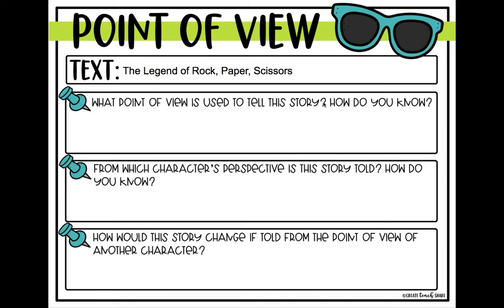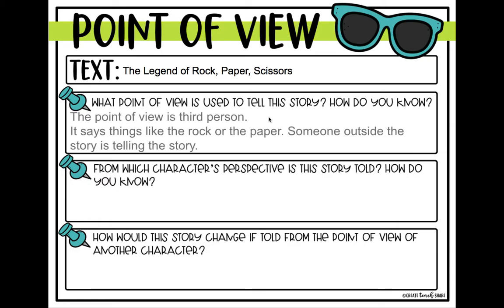Remember, we've practiced this — I'm going to count my question marks. I see two, so I need to make sure I have two answers. My points of view are first and third. First is when a character tells the story; third is when a narrator tells the story. When I think back to the book, it wasn't just from one character — there was a narrator telling the story, so it's third person. How do I know? It said things like 'the rock' or 'the paper' — someone outside the story is telling it. I know because it didn't use keywords like I, me, and my. In The Lightning Thief, Percy would say things like 'my head was spinning, I didn't know what to do, my mother was gone' — those I, me, my words. In The Legend of Rock, Paper, Scissors it was 'the rock, the paper.' So this is why it is third person.